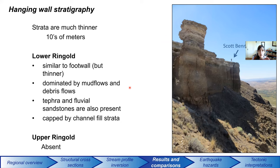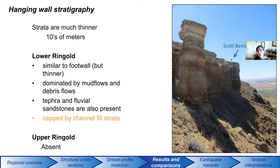In the hanging wall, there are some similarities and some differences — it's much thinner. The lower Ringgold strata are again dominated by mud flows and debris flows, one dated tephra, and a couple more sandstones, capped by fluvial channel-fill strata. There's some caliche and paleosol material right on top — a pretty impressive caliche. Importantly, the upper Ringgold formation is absent in the hanging wall — we don't see that shallow lacustrine strata there.